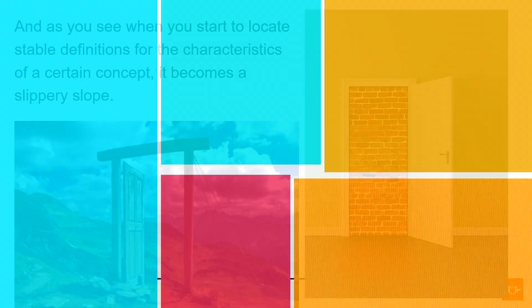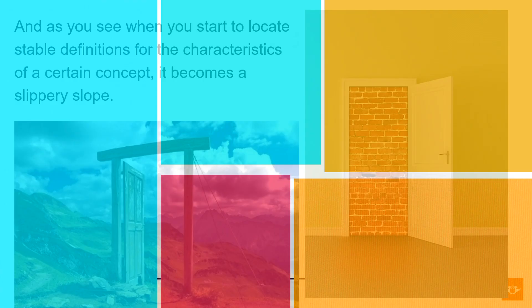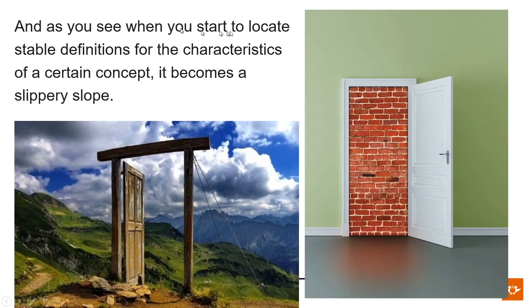When looking at color grading, manufacturers of paint actually call their colors by different names. One manufacturer might call a color 'gold' while another calls it 'golden yellow.' The bottom color may look like orange but some people might call it dark yellow. Over here we might call it aqua, turquoise, or just blue. These all fall under the concept of colors, but a panel beater might label or define these colors slightly differently. As you try to locate stable definitions for the characteristics of a certain concept, it becomes a slippery slope.